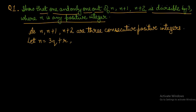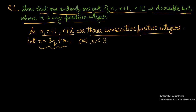We have written here n, n plus 1, n plus 2 — three consecutive positive integers. We have to show that n is equal to 3q plus r, where the value of r is minimum 0, greater than or equal to 0, but less than 3. We give this line the name line number 1. So r has 3 values: 0, 1, and 2.